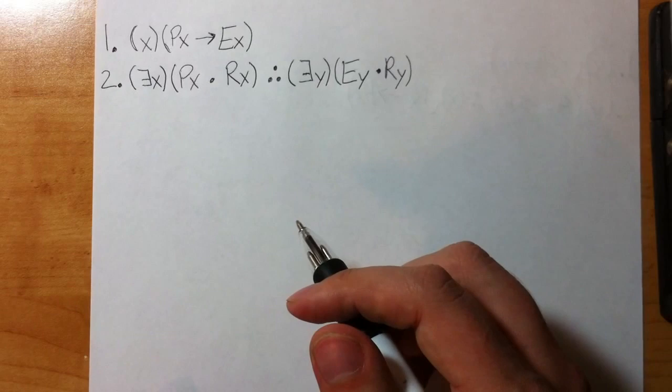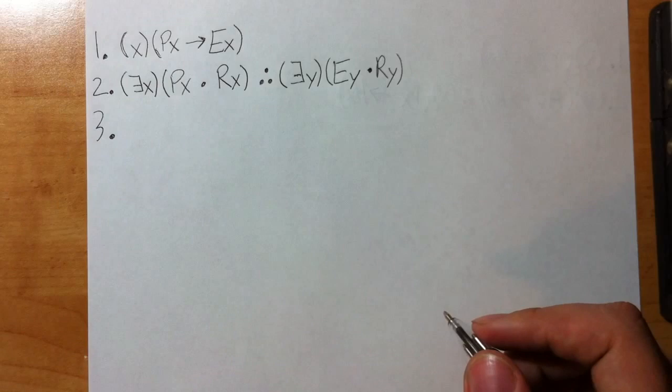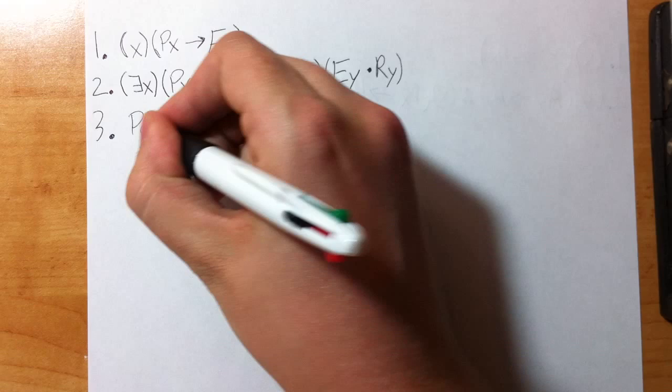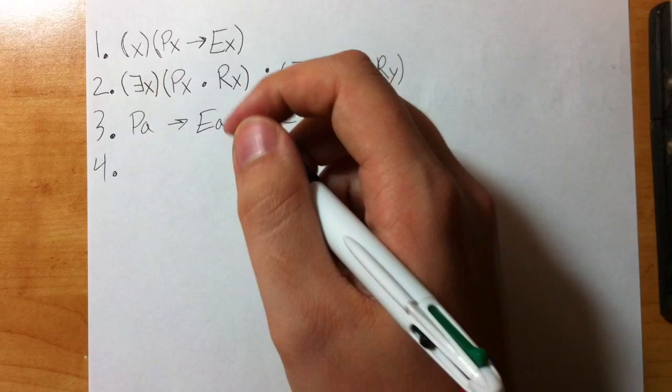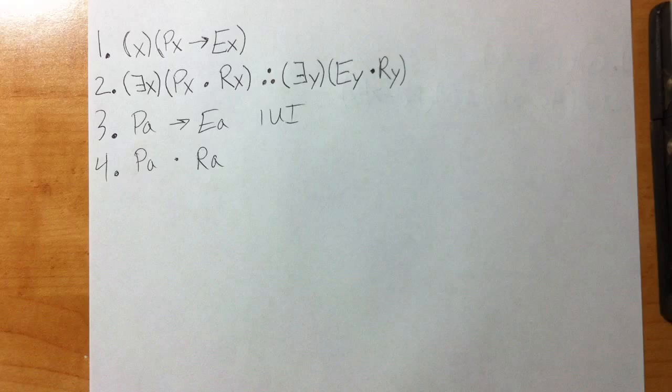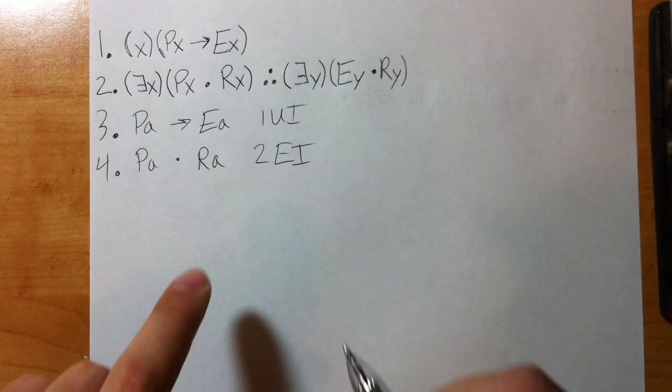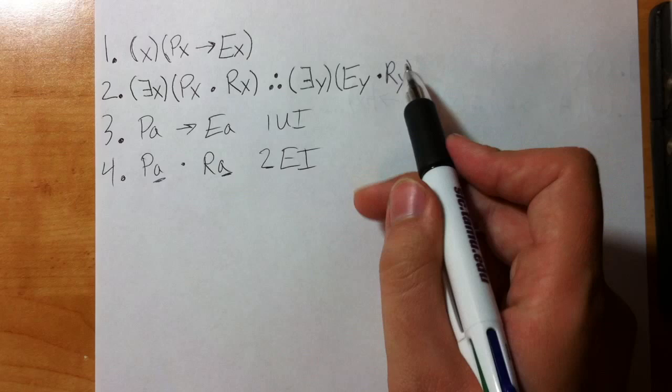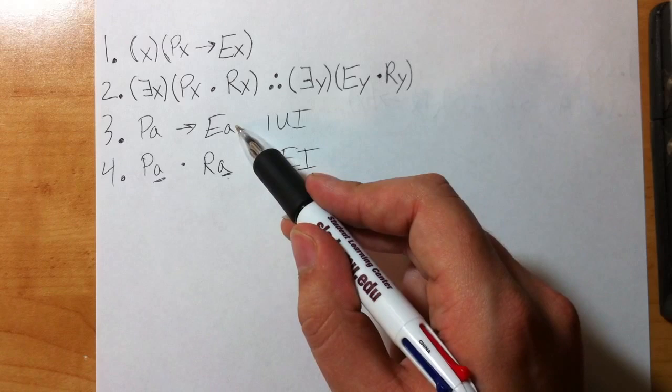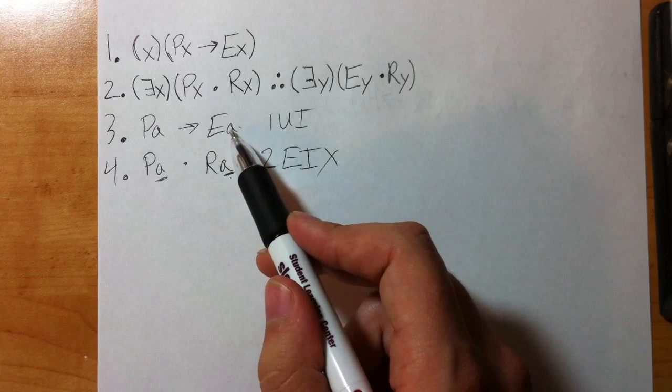So let's do a proof and ask ourselves those questions. First, line three, I can do UI just like I've been doing: Pa arrow Ea, line one UI. Line four, well right now it's time to use our new rule. We have our existentially quantified statement Pa dot Ra and that's line two EI. But remember, before you can use EI you have to ask yourselves the question. First question: does a occur earlier in the premise and does a occur in the conclusion? Well a does not occur in the conclusion so we're good there, but a does occur previously. So this is not right, this is wrong. We couldn't do this—a exists beforehand, so this is no good.